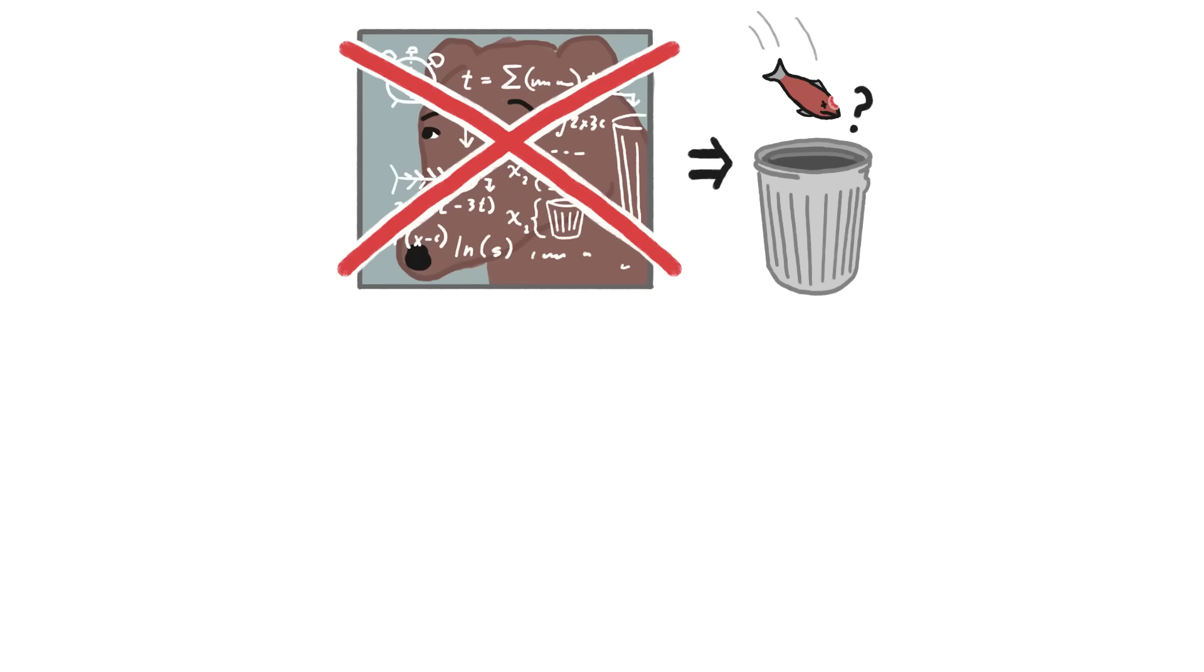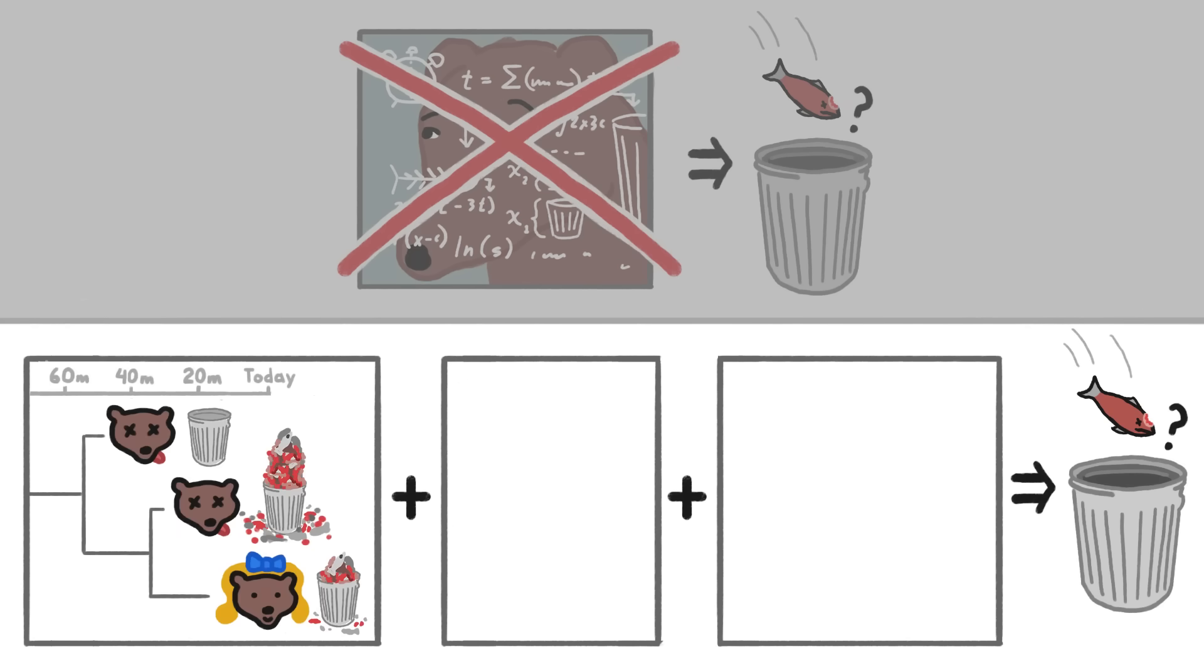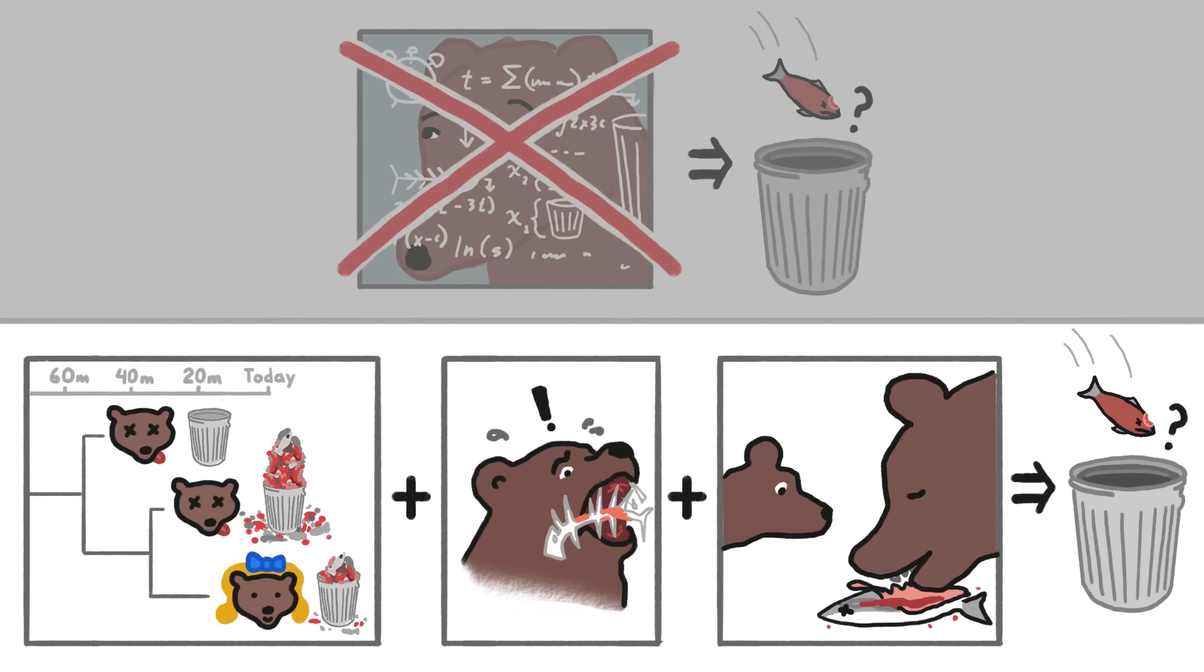Of course, animals don't actually do complex math to figure out what's worthwhile. These decisions are generally driven by instincts honed over millions of years of natural selection, supplemented by their past experiences and info they've gained from others.